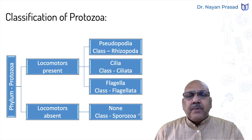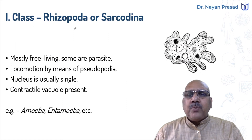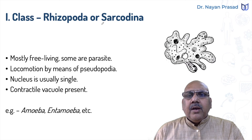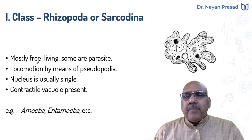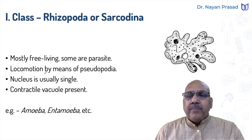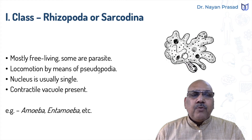Now let us see the important features of each group one by one. First, about class Rhizopoda — this class is also called Sarcodina. In this group, the members are mostly free-living, however some are parasitic also. One important feature is that locomotion takes place by means of one or more pseudopodia. Pseudopodia also help in food capturing.